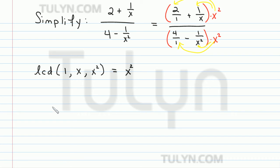So in the numerator, we get 2x squared over 1 plus x squared over x, and then in the denominator, we get 4x squared over 1 minus x squared over x squared.